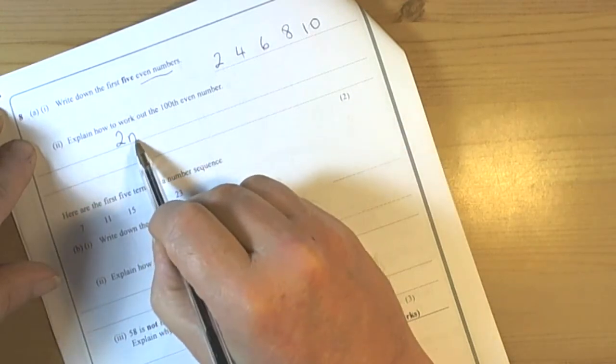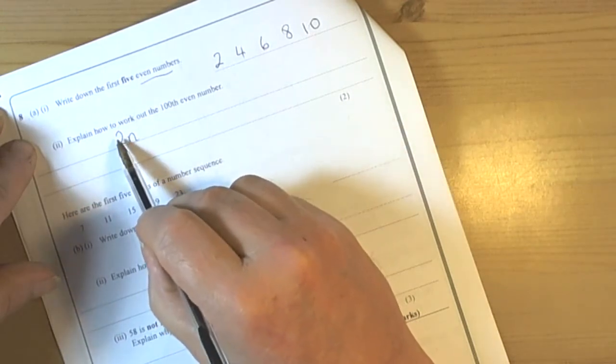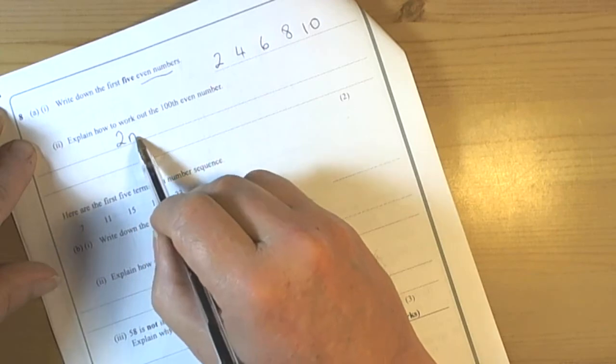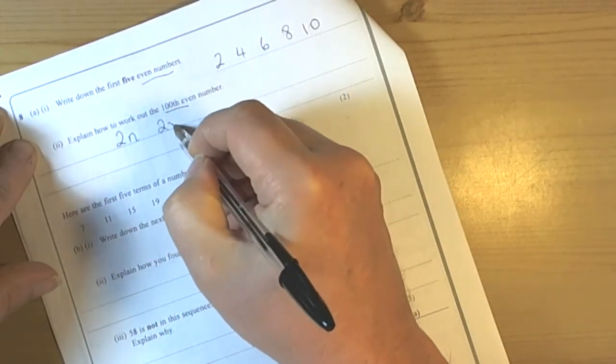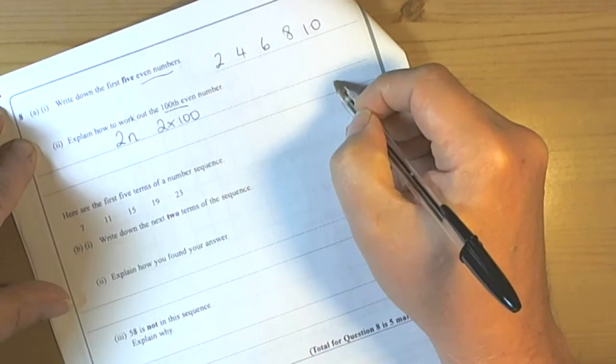So the first number of the two times table is 2 times 1. Then the second one is 2 times 2, 2 times 3 and so forth. So if I want the hundredth number then I'm going to do 2 times 100. So 200.